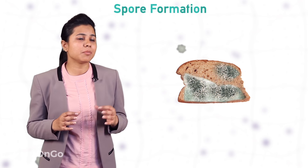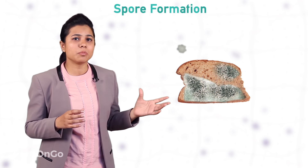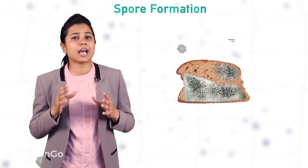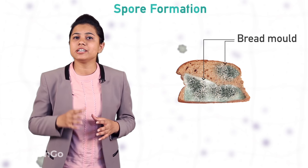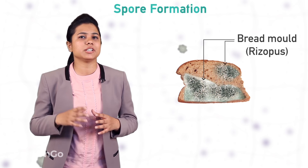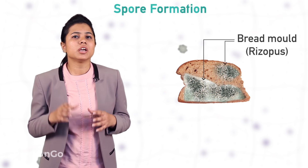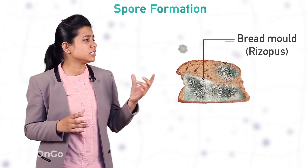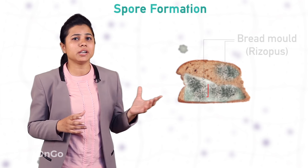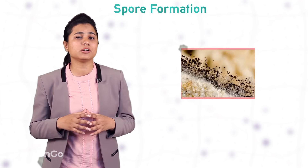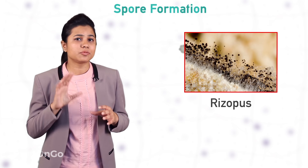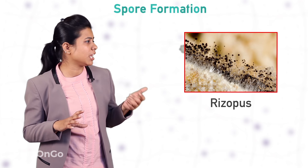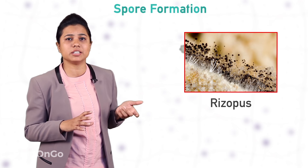This black mass is commonly called bread mold, and its scientific name is Rhizopus. If I see this slice of bread under a microscope, I will see fine thread-like projections like this.